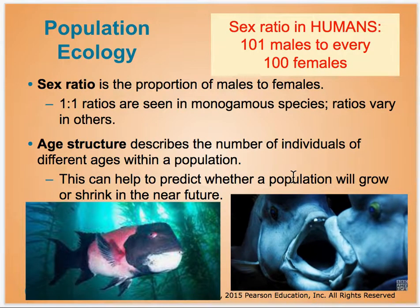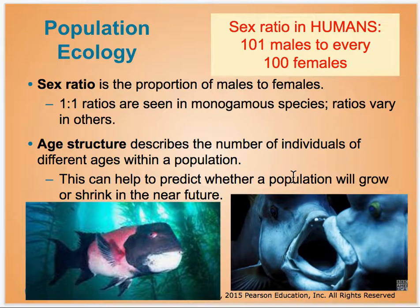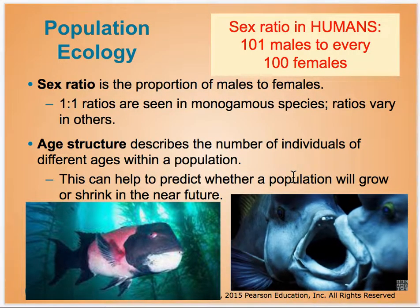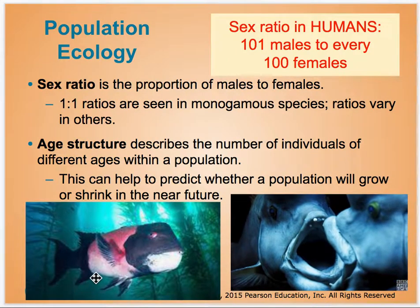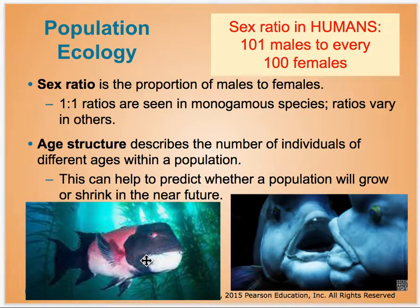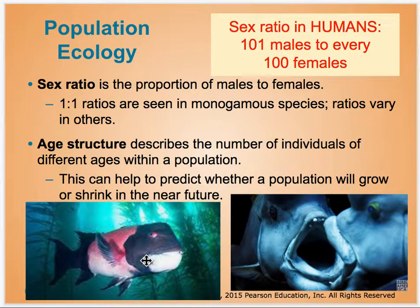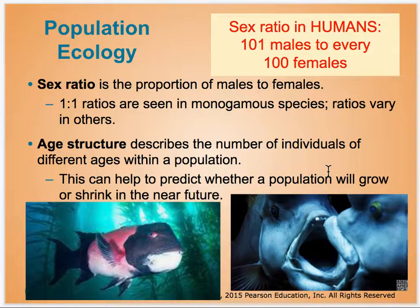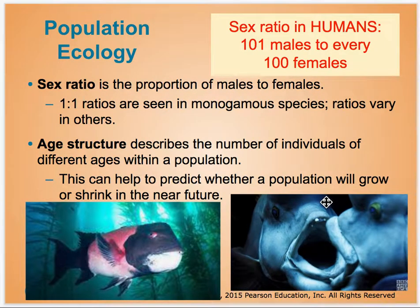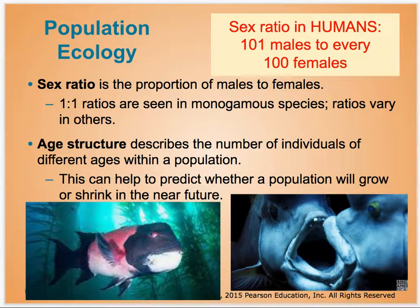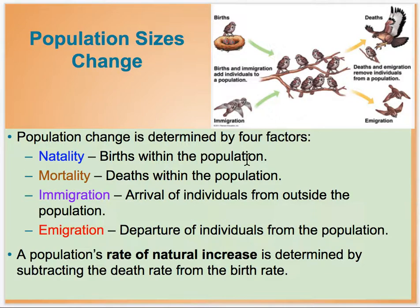Sex ratios differ depending on the animal, and age structure — how long an organism lives — also matters. Some animals like fish will lay a lot of eggs early on but very few will survive. The California sheephead from our local waters actually has nearly all females and one male in an area. When that one male dies, the females will have a large-mouth contest — opening their mouths to see who has the biggest — and the winner will actually change sex and become the new male in that area.